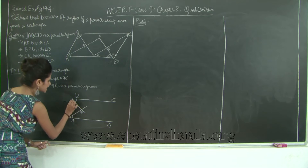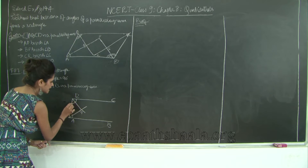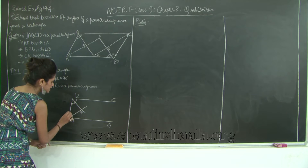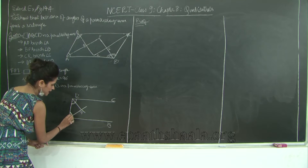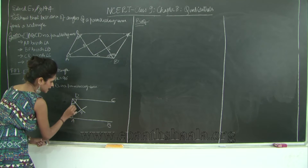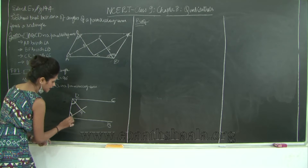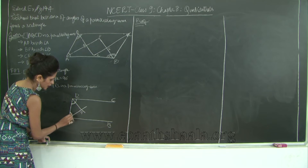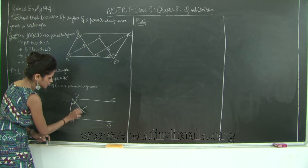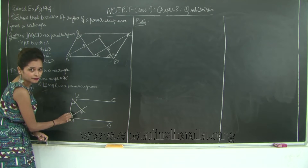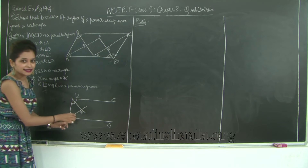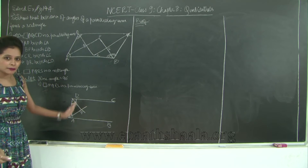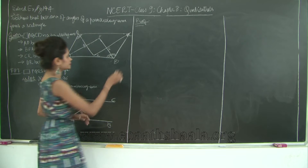Therefore this angle here — angle QAD plus angle QDA — is 90 degrees. So let us write this down.